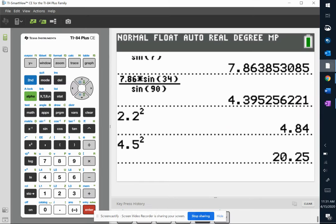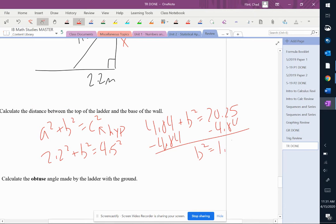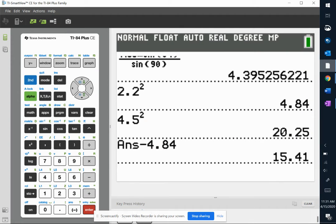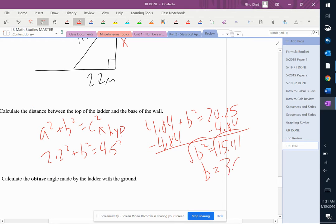B squared equals 15.41. Take the square root to get rid of the squared: 3.925, so that's 3.93 to three significant figures. So there's the answer to that.